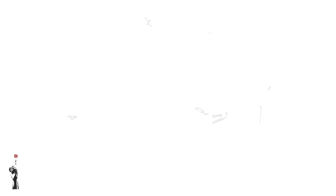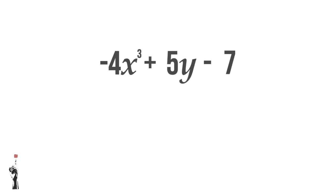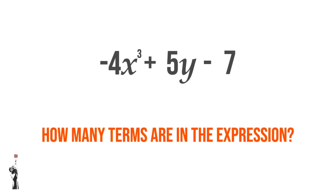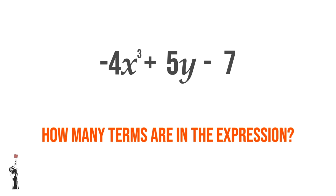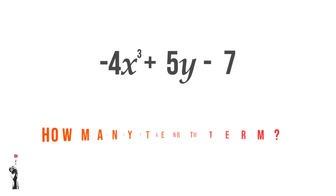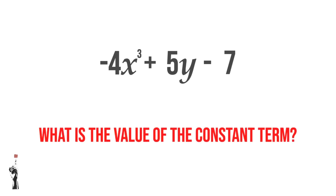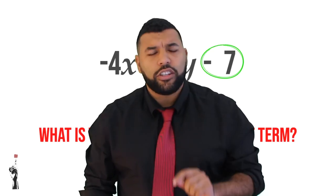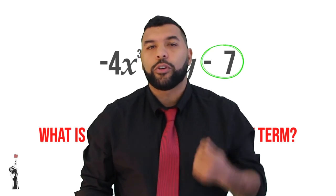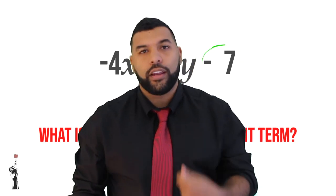Let's do a few examples. Take negative 4X cubed plus 5Y minus 7. First we ask, how many terms are in the expression? We notice a negative, a positive, and a negative sign, so there must be three terms. The next question: what is the value of the constant term? A constant term has no variable, so in this case, our constant term is negative 7 — not just 7, but negative 7, because we include the sign with the number.